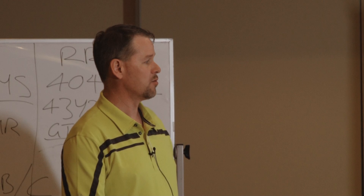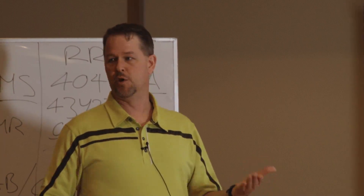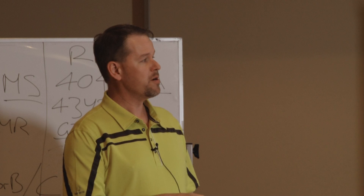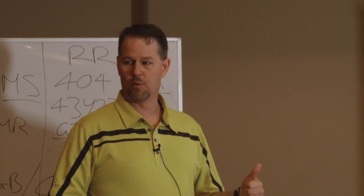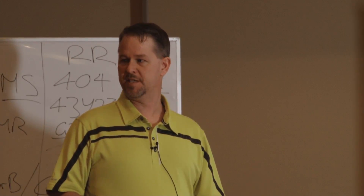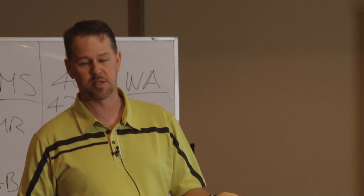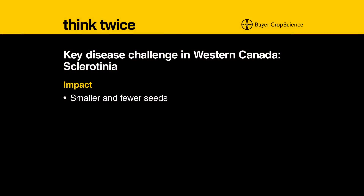The impact results from fewer seeds or smaller seeds. So if you've got premature ripening, you won't have as good a seed set — maybe less seed set, or certainly the possibility of shrunken seeds and smaller seeds with lower test weight. With premature ripening, you can also end up with shattering during the windrowing process, resulting in shattered pods and loss of seeds.